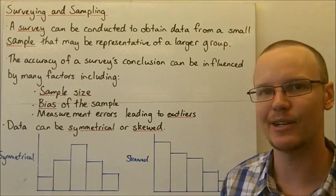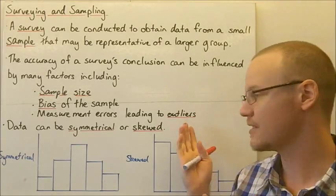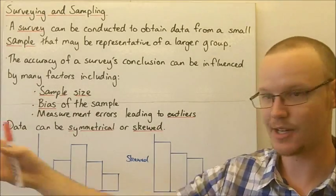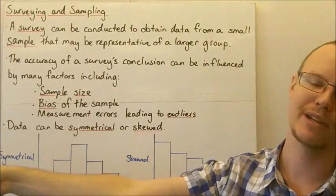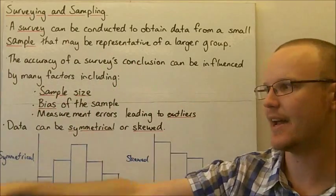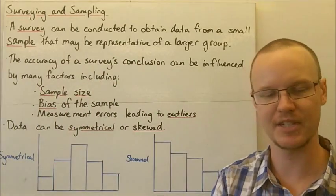We can get these things called outliers. An outlier, it sounds like it lies out and it does. They're data points that are really far away and out there from the rest of the data that's collected.